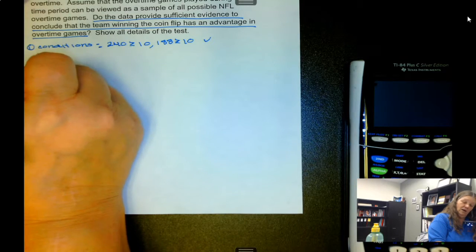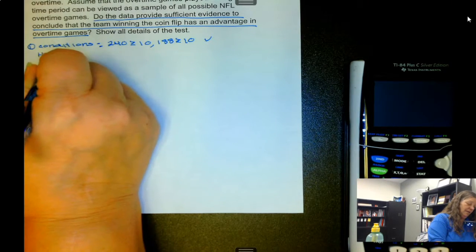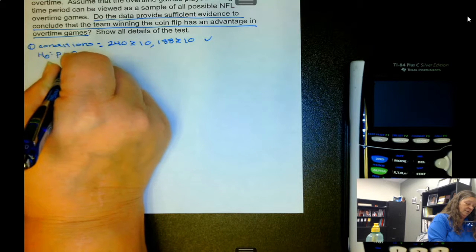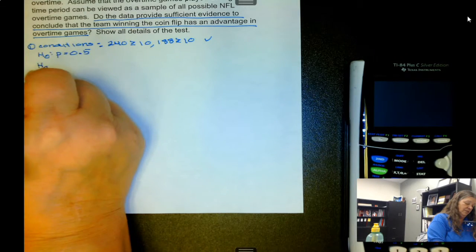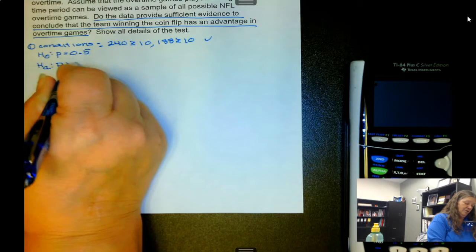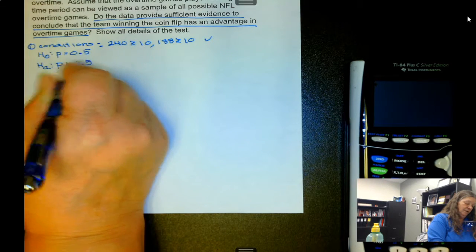Our null hypothesis would be that p equals 0.5. Alternative is p is greater than 0.5.